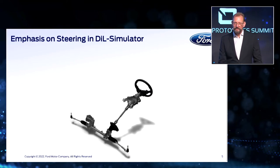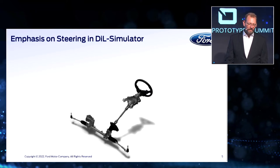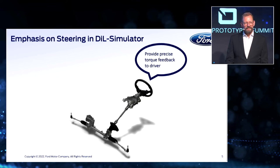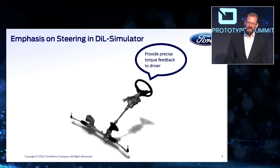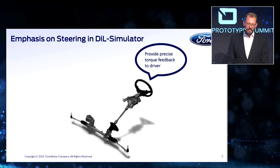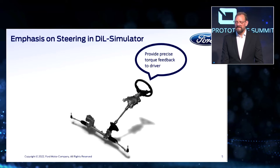We put special emphasis on the steering in our DIL simulator, and there are mainly two requirements we've identified. The first is to provide precise torque feedback to the driver. With the system we have currently, the vehicle dynamics steering evaluators told us it really feels like a vehicle steering, as long as you don't steer too hard. So our use case of up to 0.3G is well supported, as long as you don't steer too fast.